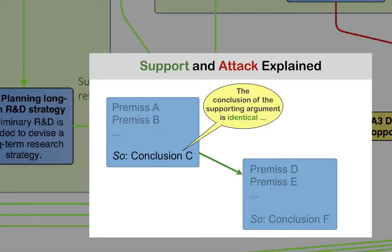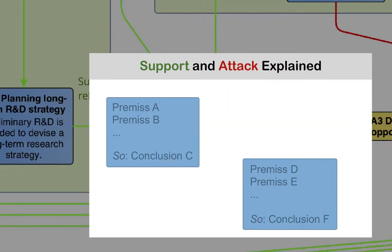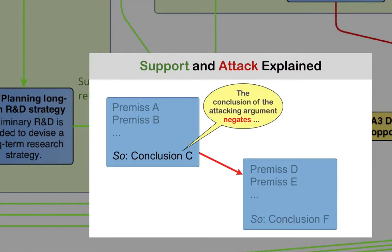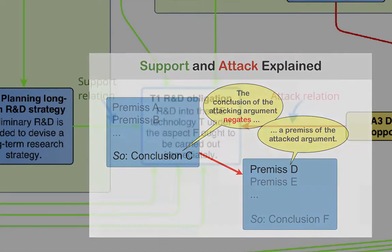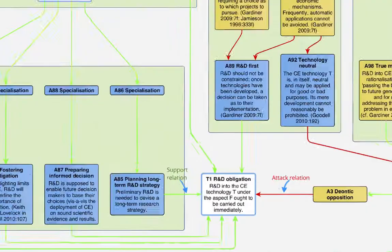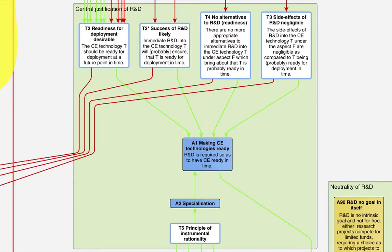A support relation holds if the conclusion of the supporting argument is identical with the premise of the supported argument. An attack relation holds if the conclusion of the attacking argument negates a premise of the attacked argument. Claim T1 R&D Obligation is backed up by a central justification of R&D, which is shown here. Argument A1, making climate engineering technologies ready, states that R&D is required so as to have climate engineering ready in time. The filled boxes represent arguments, whereas the white boxes represent theses. These are four theses which support argument A1, meaning that these theses represent premises argument A1 relies on. Each of these four claims gives rise to a more or less extensive sub-debate of the controversy, and that's why we may think of the central R&D justification as a way to structure the entire debate.